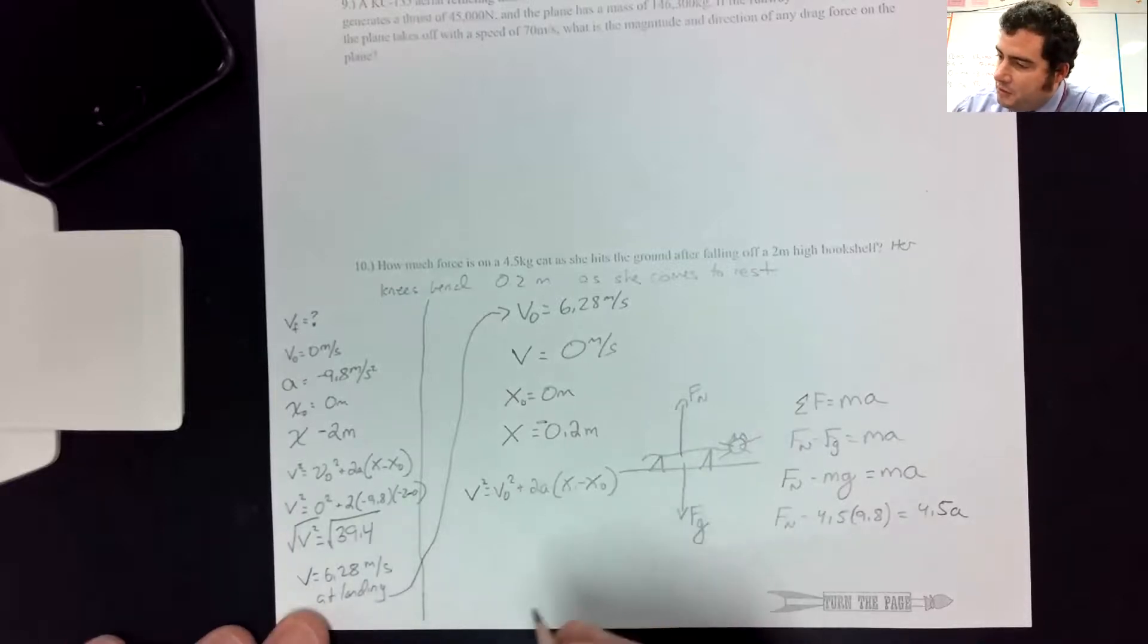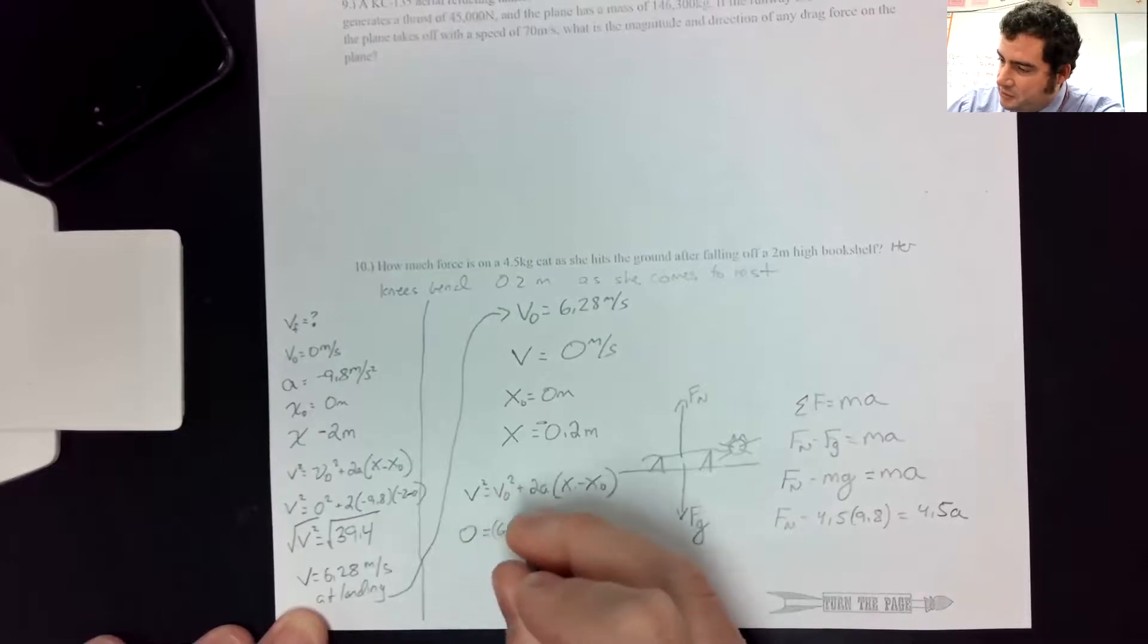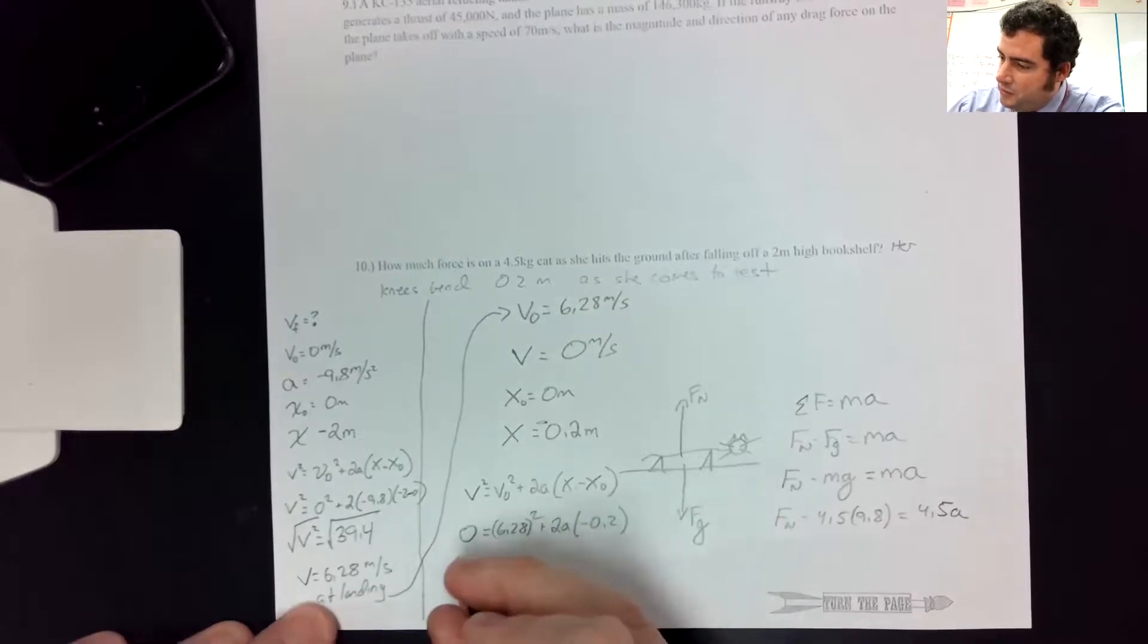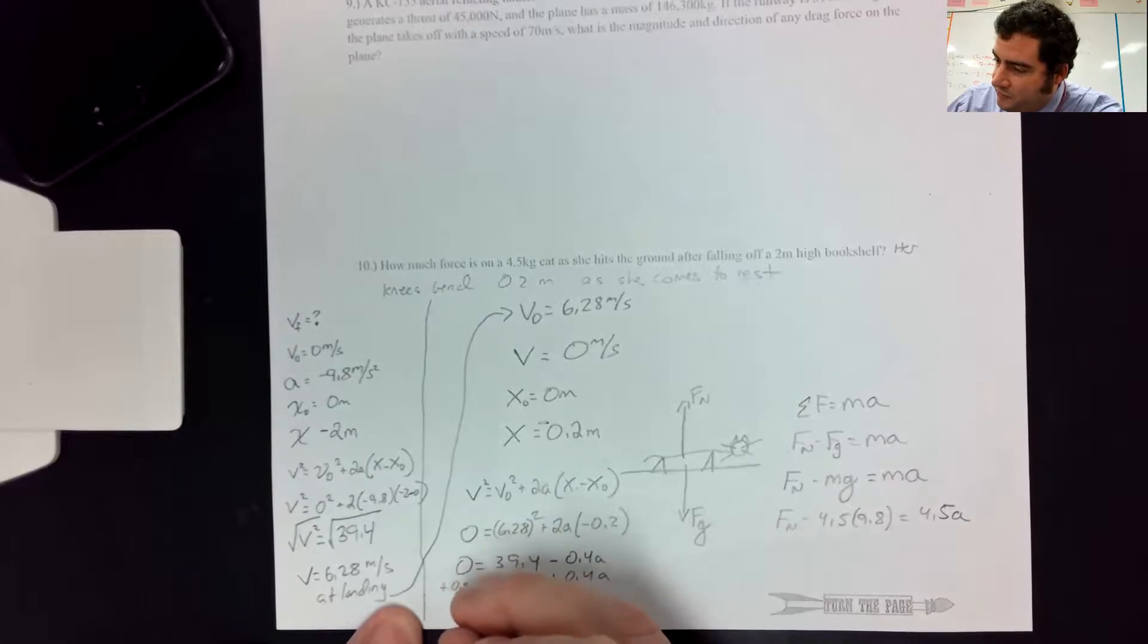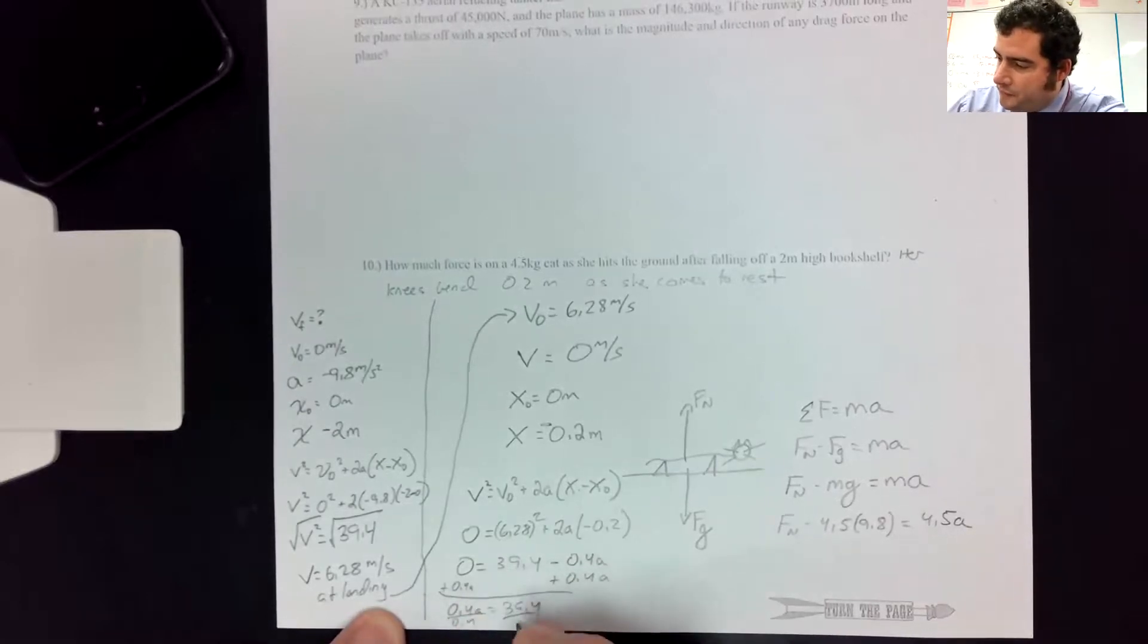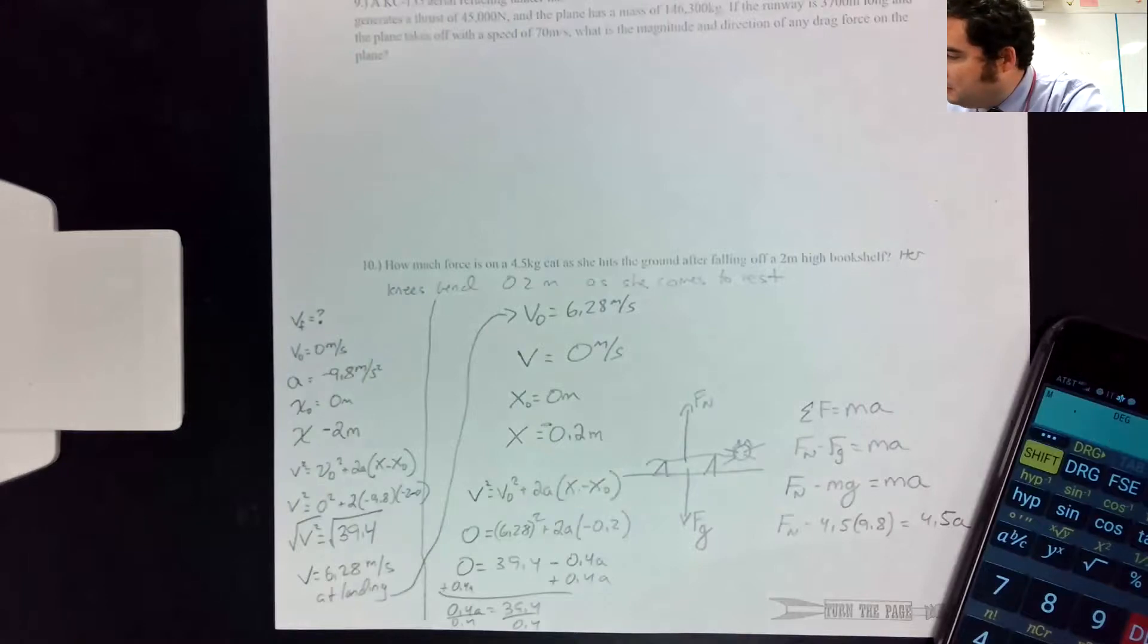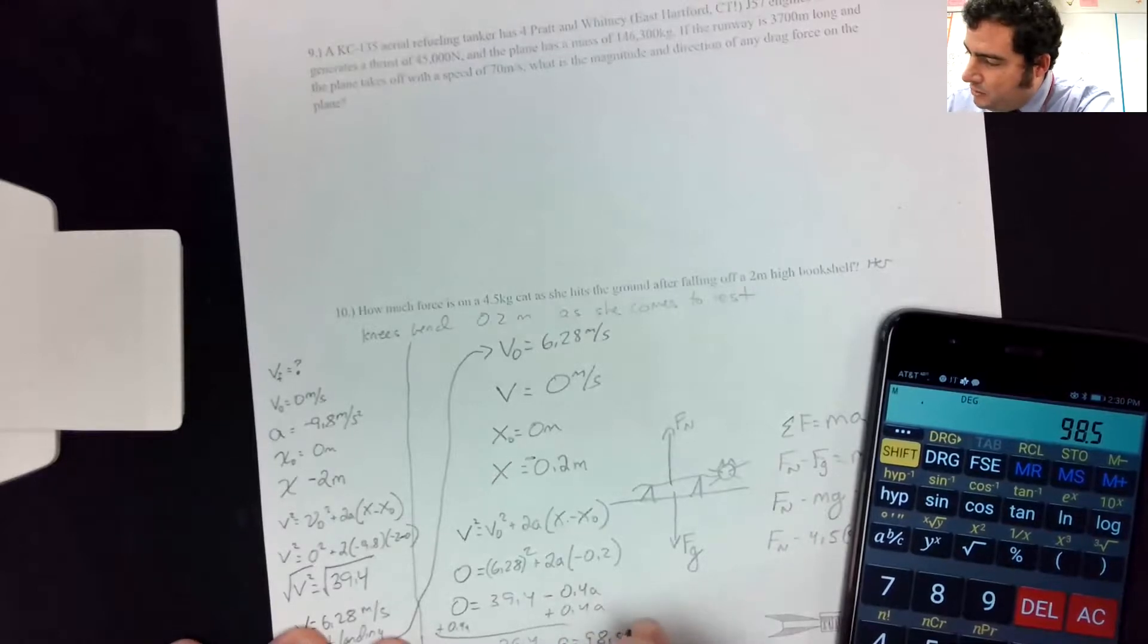So now we've got 0 is 6.28 squared plus 2a minus 0.2. So 0 is 39.4 minus 0.4a. So I'll add that to both sides. And now I can solve. 39.4 divided by 0.4. So 98.5 meters per second squared.